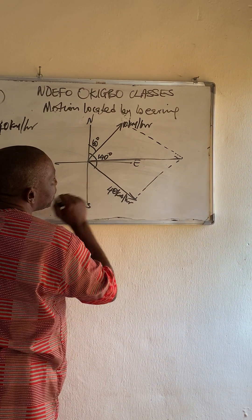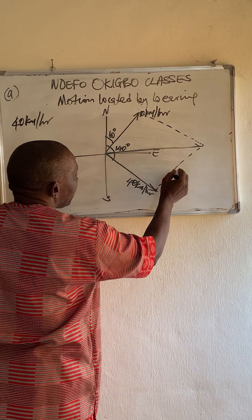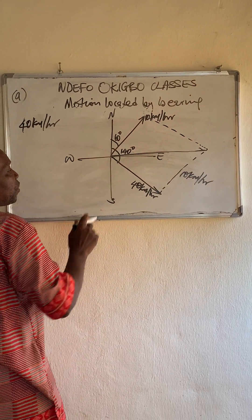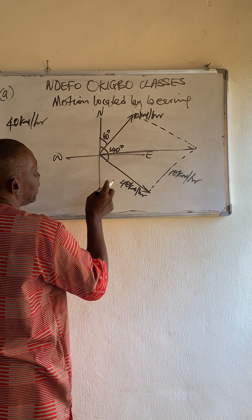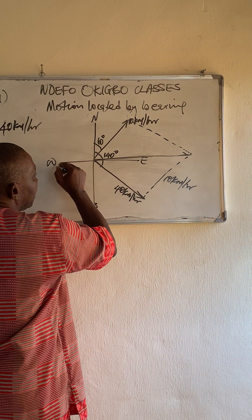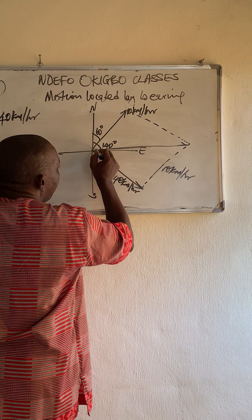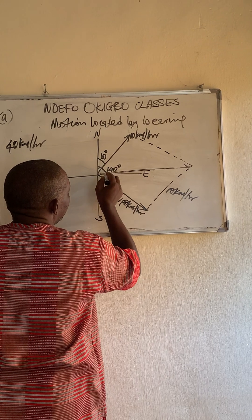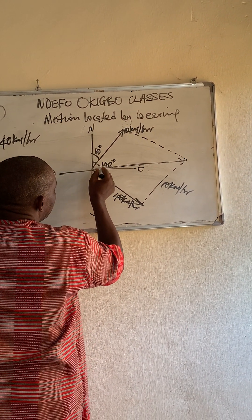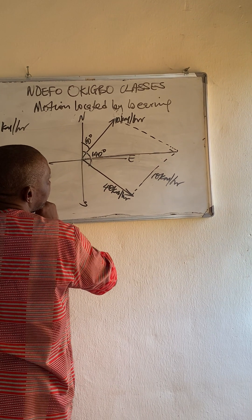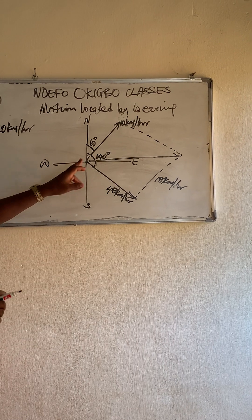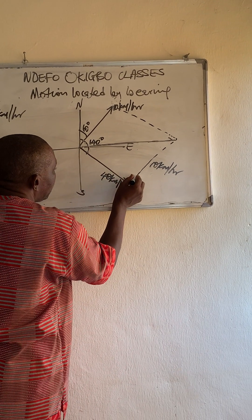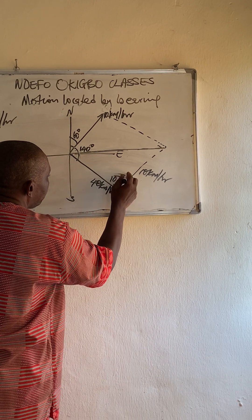So here, this is 40 km per hour, and this can be 10 km per hour. If this is 140, that means this is 60, then this will remain 100 degrees — 440 minus 60 gives 80, so here should be 100 degrees.